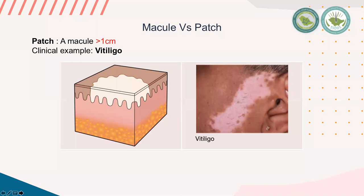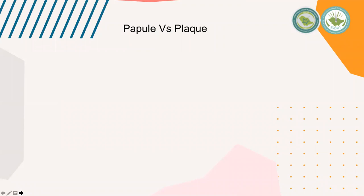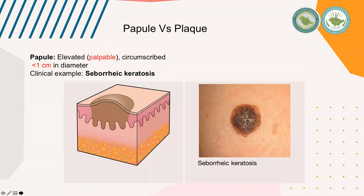Now we move to papule versus plaque. They are elevated skin lesions — palpable and well-circumscribed. In the case of a papule, it is less than one centimeter in diameter. A clinical example is seborrheic keratosis: we can see this single brownish hyperpigmented lesion elevated from the surrounding normal skin, so it is palpable, and we can see a greasy scale on top of it.